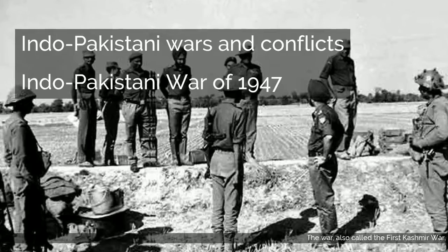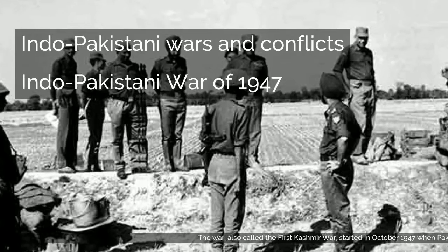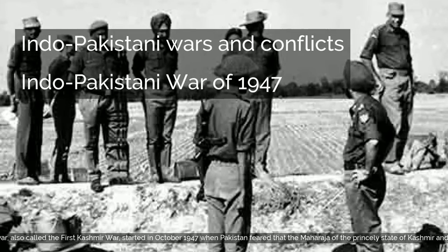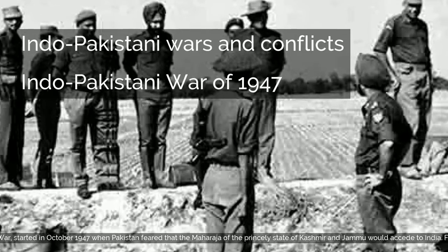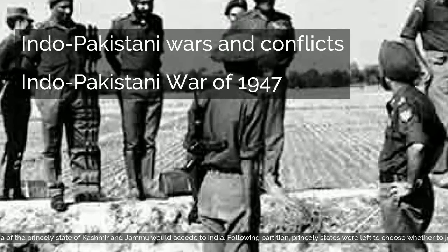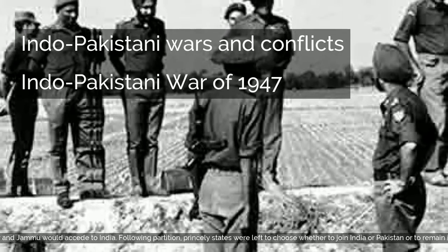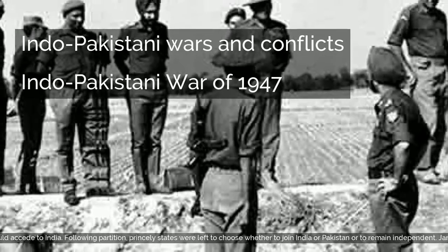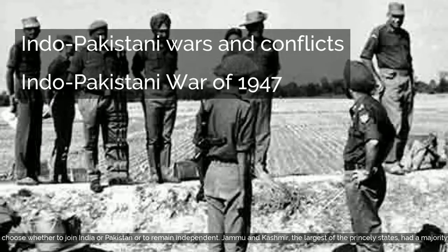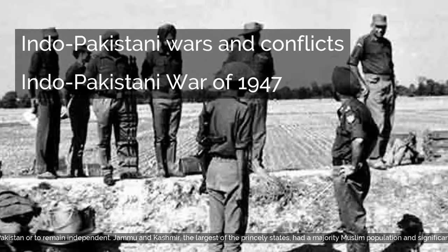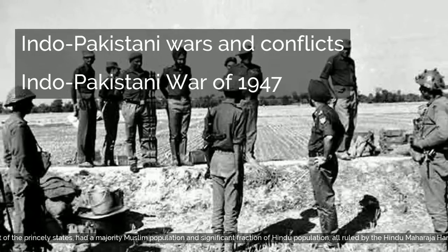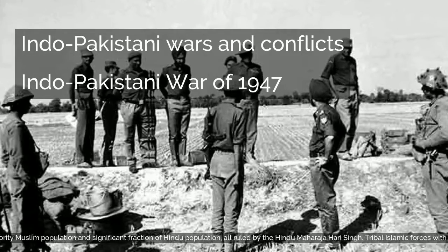The war, also called the First Kashmir War, started in October 1947 when Pakistan feared that the Maharaja of the princely state of Kashmir and Jammu would accede to India. Following partition, princely states were left to choose whether to join India or Pakistan or to remain independent. Jammu and Kashmir, the largest of the princely states, had a majority Muslim population and a significant fraction of Hindu population, all ruled by the Hindu Maharaja Hari Singh.